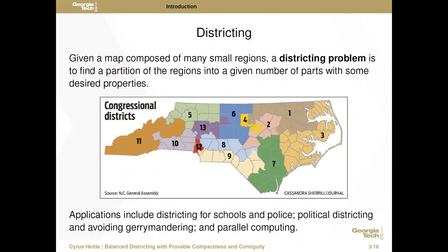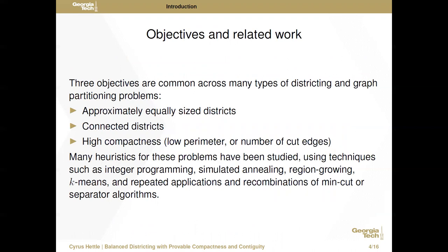So what are districting problems in general? The most classic and familiar example is: given a map divided into regions, we want to group those regions into larger parts such that those parts have some desired properties. Applications are many and varied — in civic applications for schools, police, other emergency services, waste, for political districting and gerrymandering, and even in parallel computing where computations on a large mesh network require a divide-and-conquer approach to divide the network into smaller individually tractable pieces.